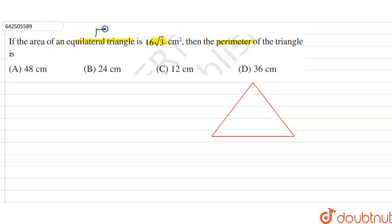An equilateral triangle is a triangle in which all three sides are equal. So let's say that the sides of the triangle are x centimeters.